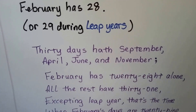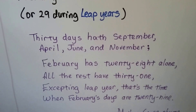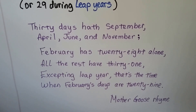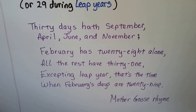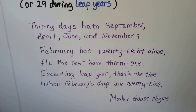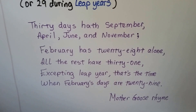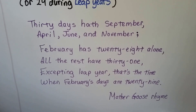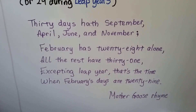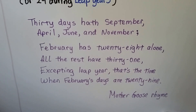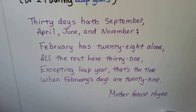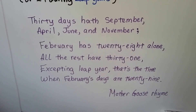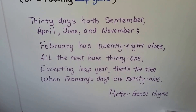There's a Mother Goose rhyme, and it says: 30 days has September, April, June, and November. February has 28 alone. All the rest have 31. Except leap year — that's the time when February's days are 29.